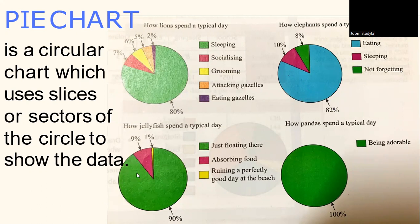And then we see the third example, how jellyfish spent a typical day. We have 90% jellyfish just floating, 9% absorbing food, and only 1% ruining a perfectly good day at the beach. And let's see how pandas spent a typical day. Pandas being adorable 100%. This is how the data is being interpreted and tabulated in the forms of pie charts.